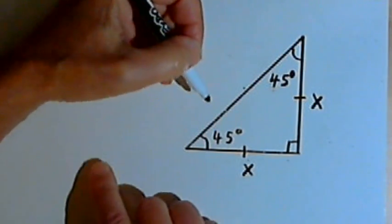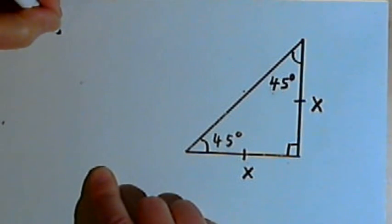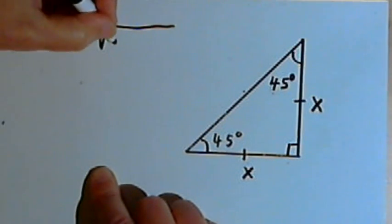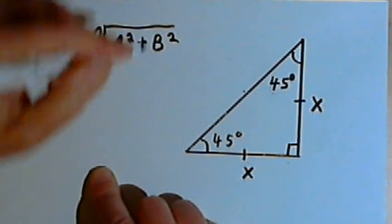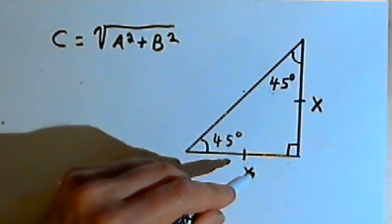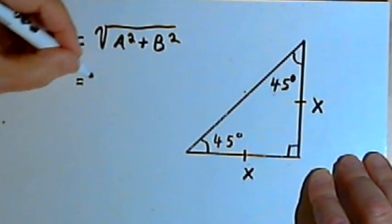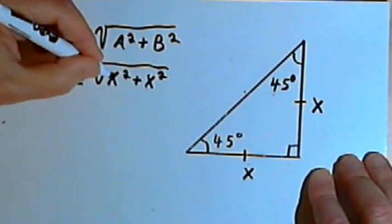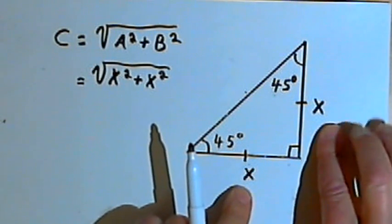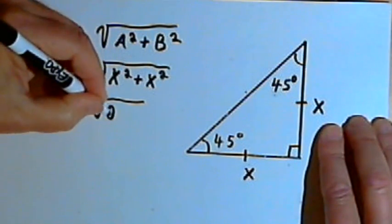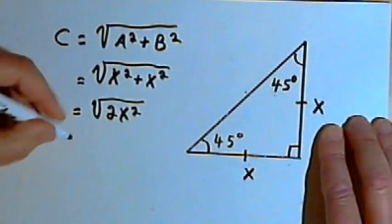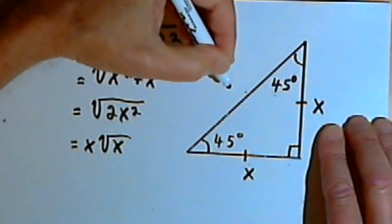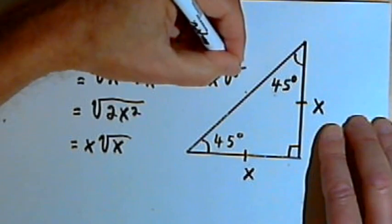Let's find the length of the hypotenuse using the Pythagorean theorem. The hypotenuse c equals the square root of a squared plus b squared, where a and b are the two legs. So c equals the square root of x squared plus x squared, which is the square root of 2x squared, and that simplifies to x times the square root of 2. So the hypotenuse is labeled x times the square root of 2.